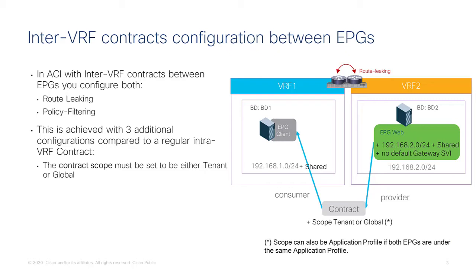The contract scope must be set to tenant, global, or application profile. It cannot be VRF, because a scope set to VRF prevents this configuration from working — it means the contract should only be used within the same VRF. If the two EPGs are in the same application profile, you can set the scope to application profile; otherwise, set it to tenant. If the EPGs are in different tenants, set the scope to global.